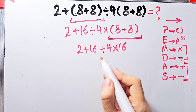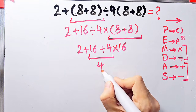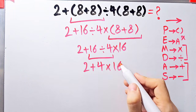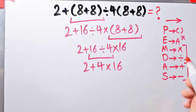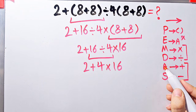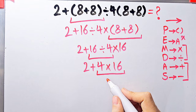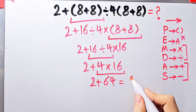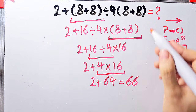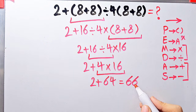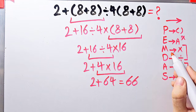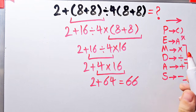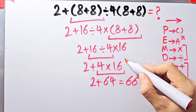First simplify the division: 16 divided by 4 equals 4. Now we have 2 plus 4 times 16. Multiplication has higher priority than addition, so 4 times 16 equals 64. Now 2 plus 64 equals 66. The final answer is 66. If you want the right answer you must follow the PEMDAS rule. Thanks for watching — please subscribe and leave a comment. Goodbye!